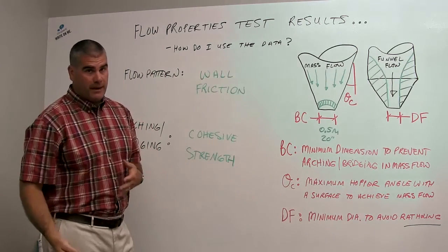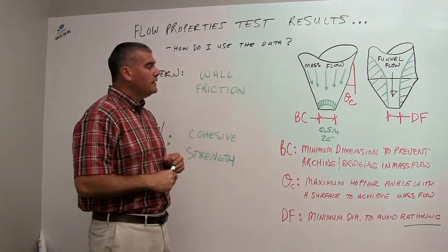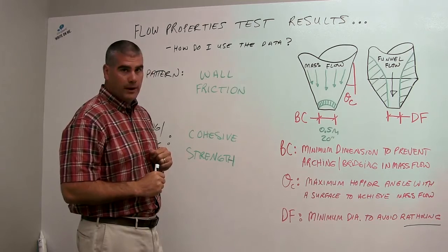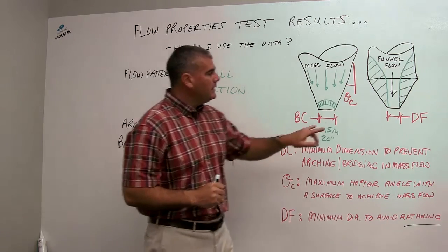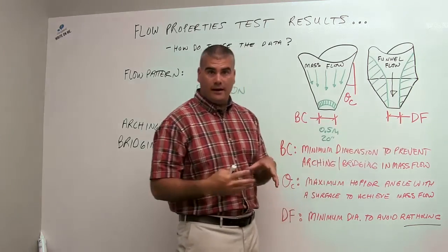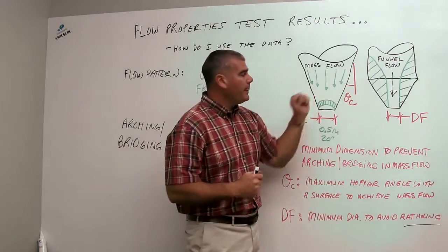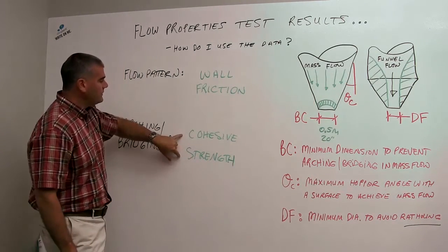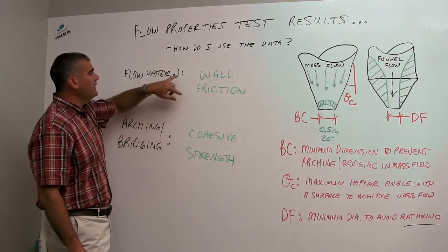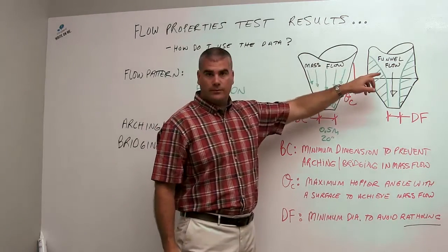If that's a fine powder, it's going to cake. If it's a segregation issue, it's going to affect mixed quality. Certainly caking can be paramount occurring in a funnel flow bin with ratholing problems. So we need to make this dimension at least as large as DF, that diameter, to overcome a stable rathole in a funnel flow bin. And we get those data in the cohesive strength section. But we can also look at the wall friction data to tell us if we have mass flow or funnel flow.